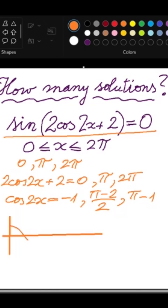So cosine of 2x will look something like this.